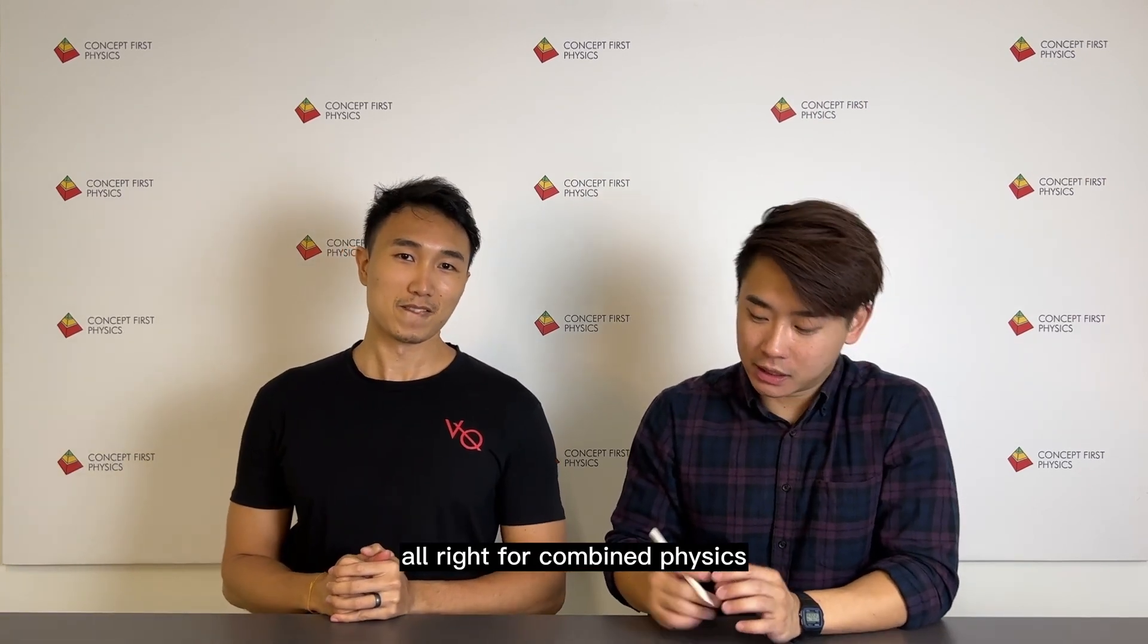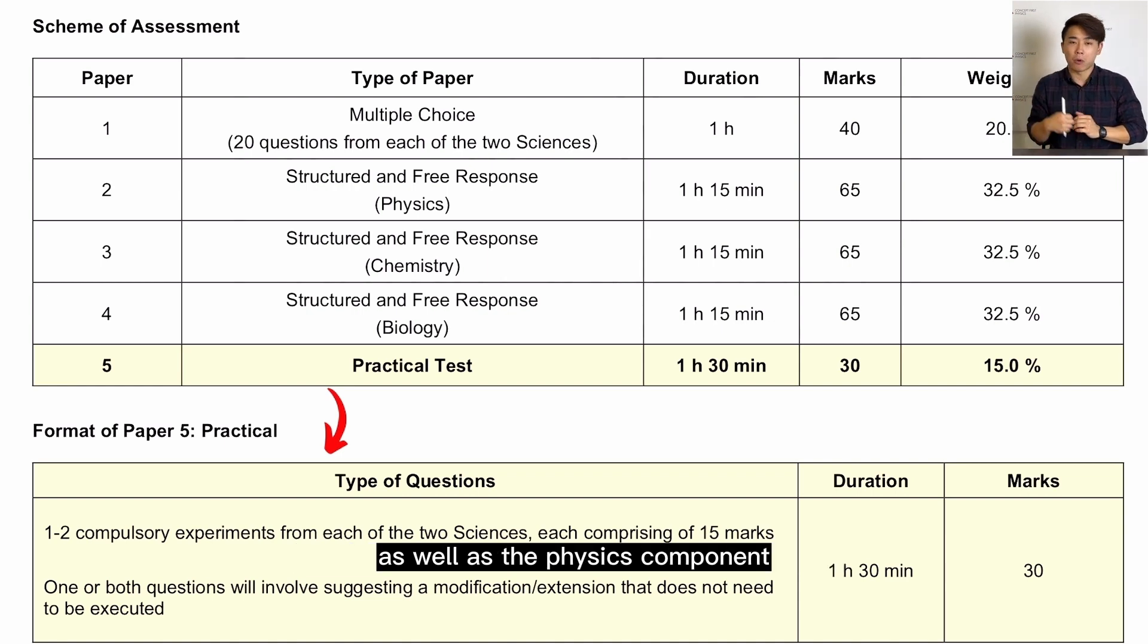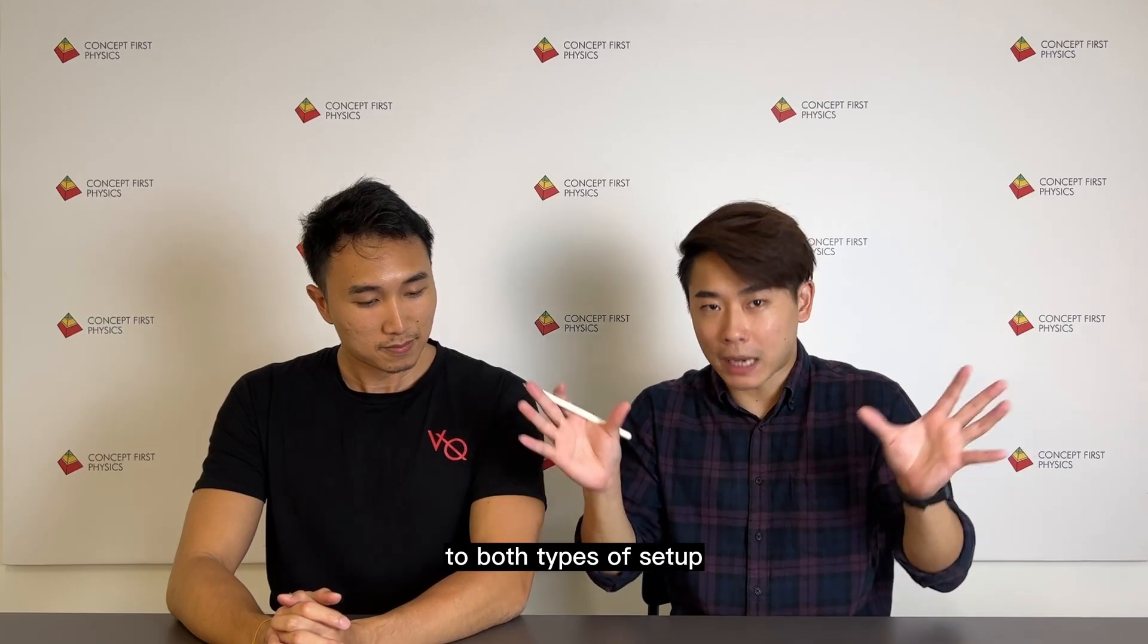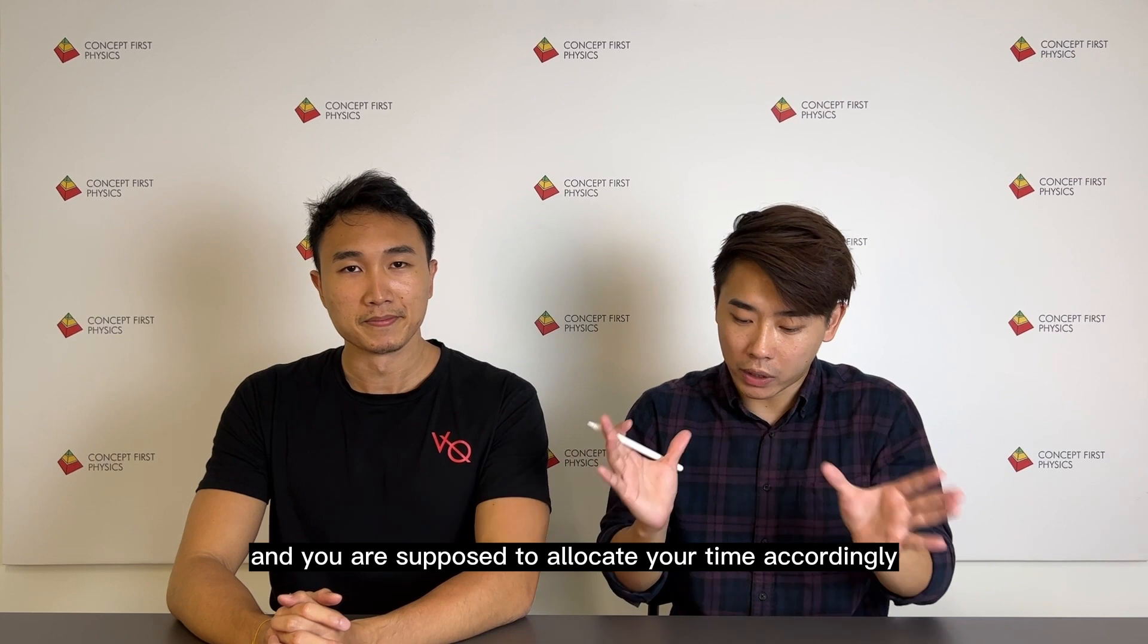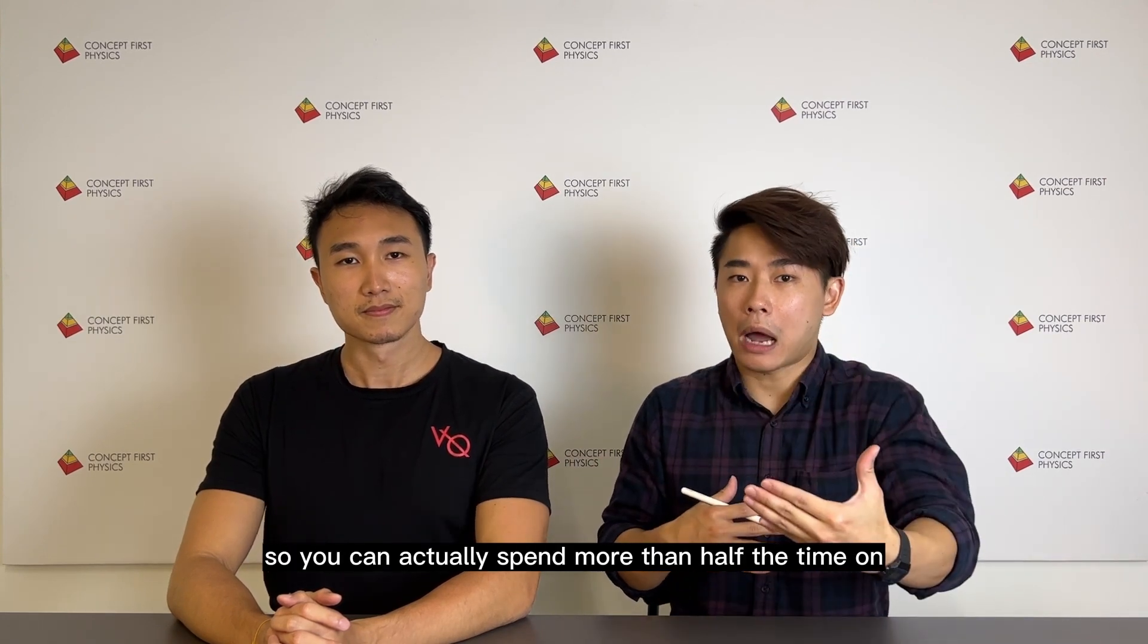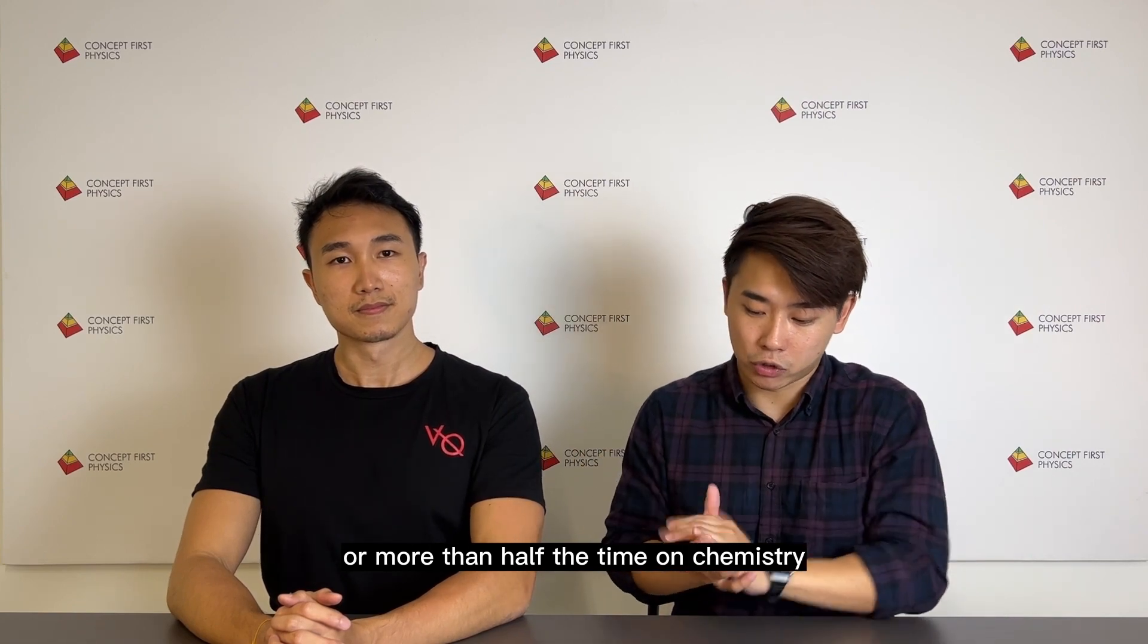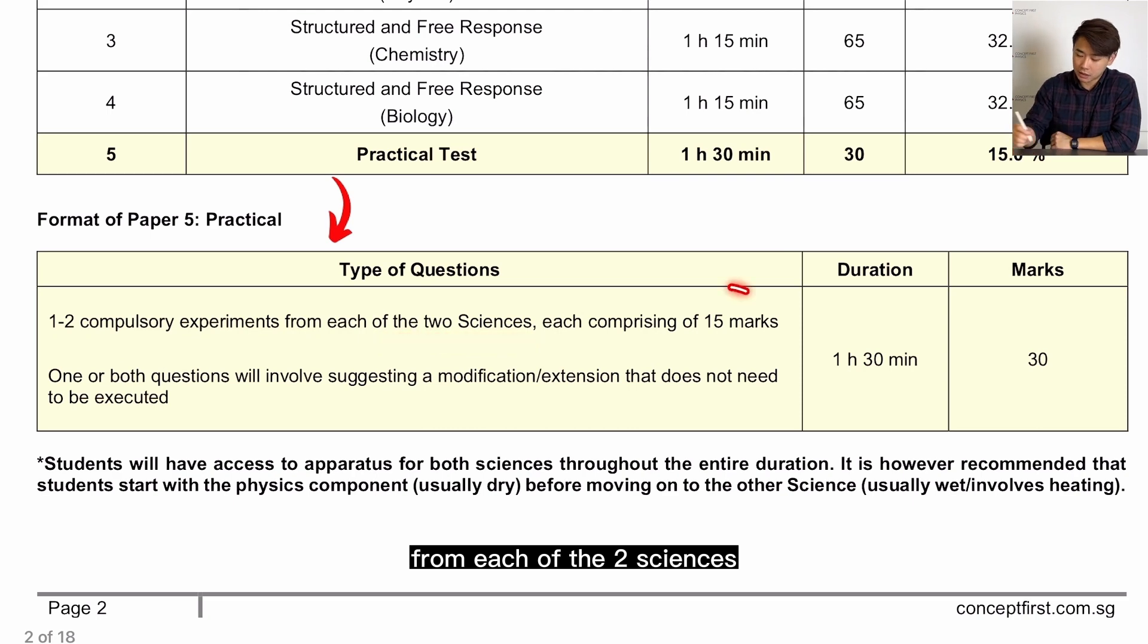Alright, for combined physics it's slightly different because students you have 1 hour 30 minutes for the entire experiment, but that includes both the chemistry component as well as the physics component. So in this 1 hour 30 minutes you have access to both types of setup whether chemistry or physics and you are supposed to allocate your time accordingly. So you can actually spend more than half the time on let's say physics or more than half the time on chemistry. Now there will be 1 to 2 compulsory experiments from each of the 2 sciences and each of them will be 15 marks each.